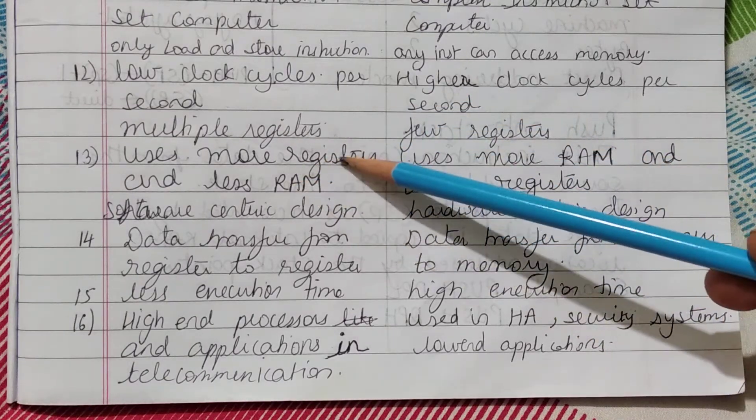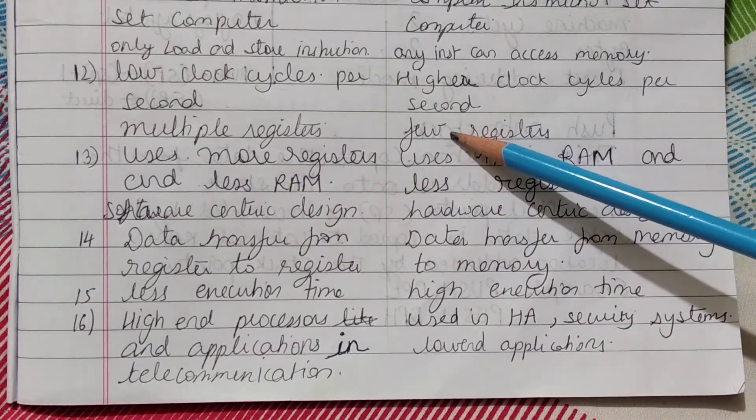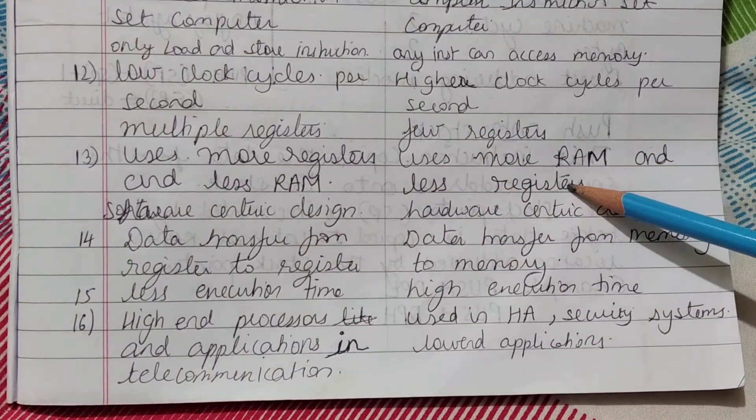RISC uses more registers and less RAM, but CISC uses more RAM and fewer registers.